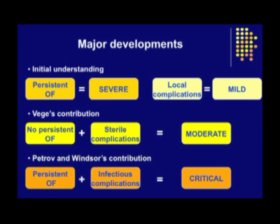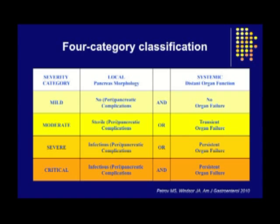Our findings, as just presented, support a new category of severity, with the worst prognosis category being those with both organ failure and infected pancreatic necrosis, which we term critical acute pancreatitis. This data provides a sound justification for the four-category classification of acute pancreatitis, which is available as an open-access article in the January 2010 issue of the American Journal of Gastroenterology.